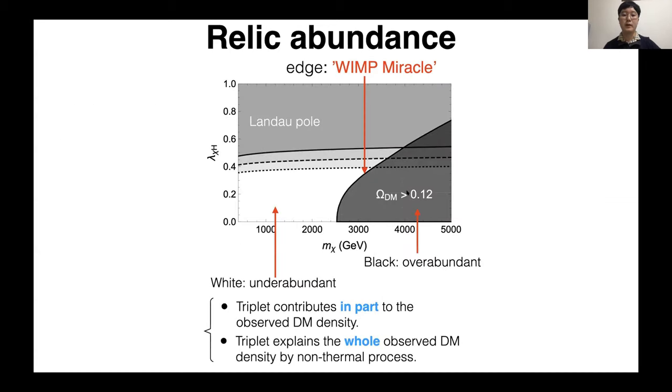The result is in this figure. Shaded region is excluded because the scalar triplet is overabundant. The region on the H is WIMP miracle region, on which the thermal relic of scalar triplet explains the observed dark matter density. And unshaded region is underabundant. And in this region, we can consider two scenarios. Scenario one: triplet contributes in part to the observed dark matter density, and other parts is from other dark matter candidates, like axions. And scenario two: triplet explains the whole observed dark matter density by non-thermal process. I'll calculate constraints to these two scenarios.